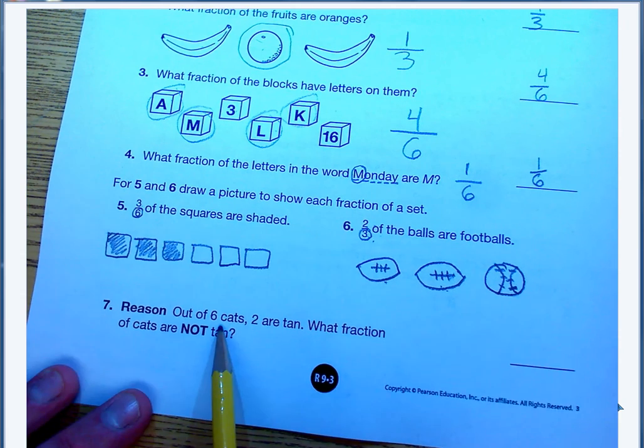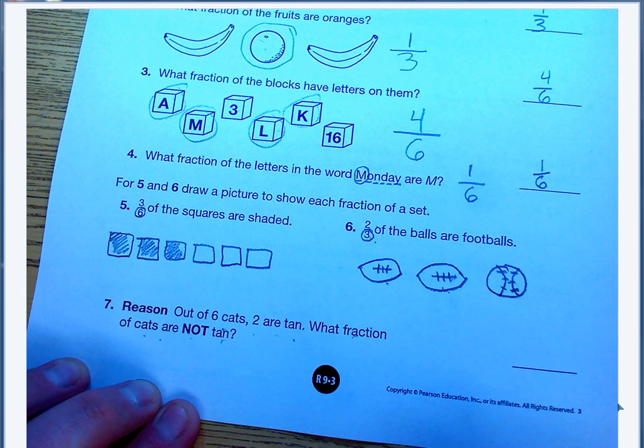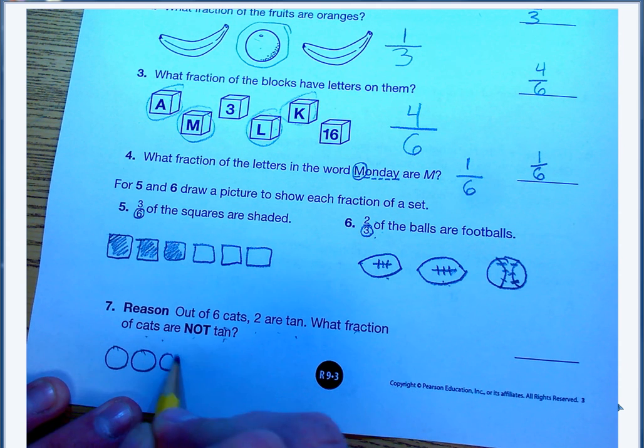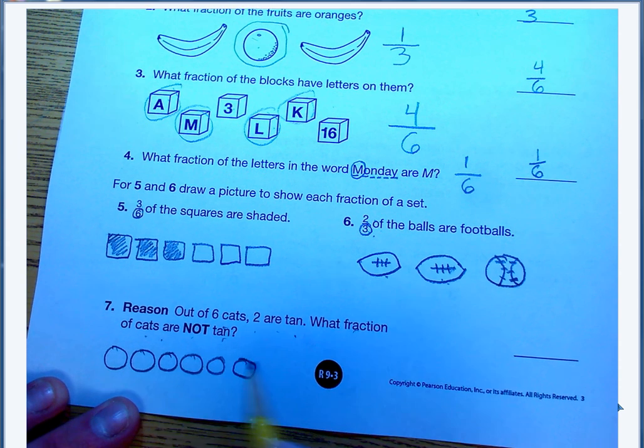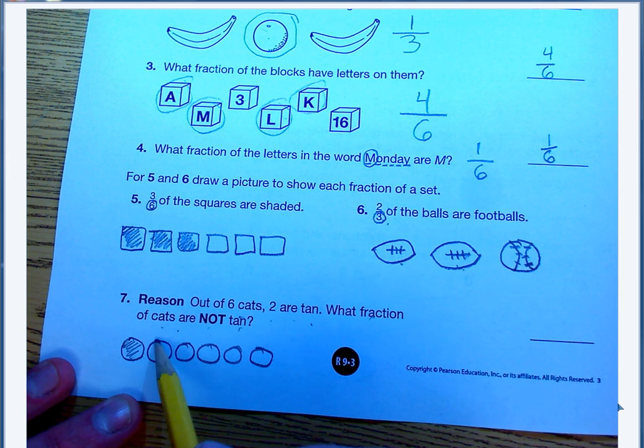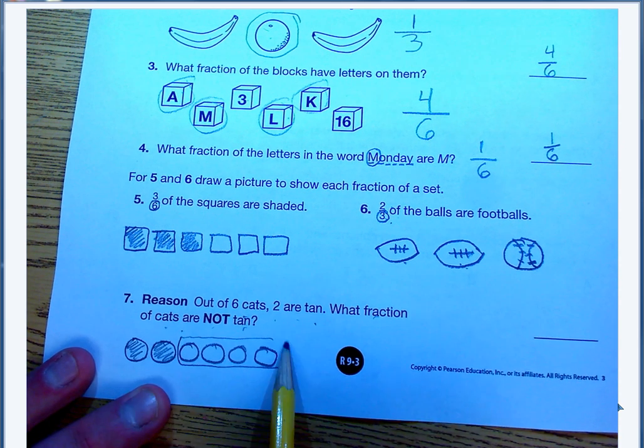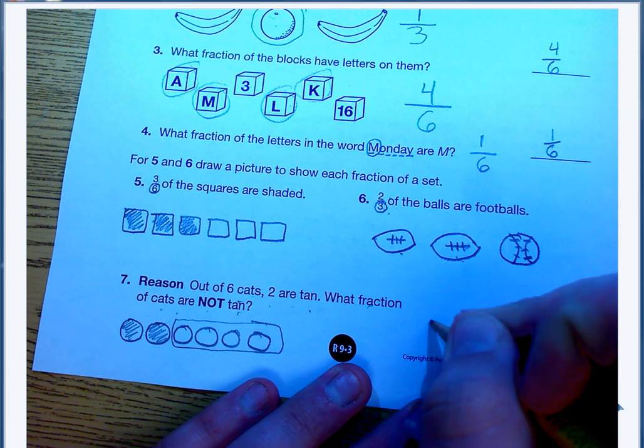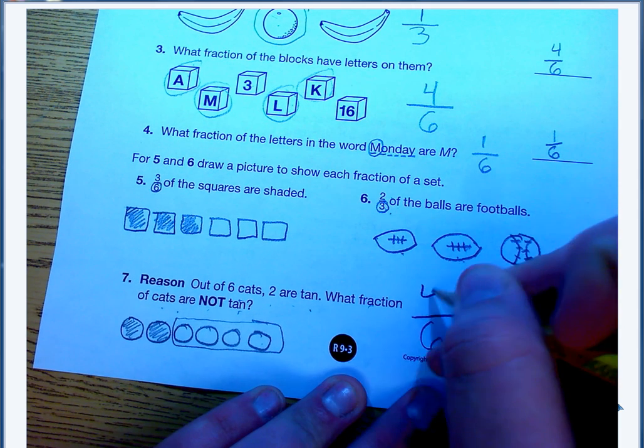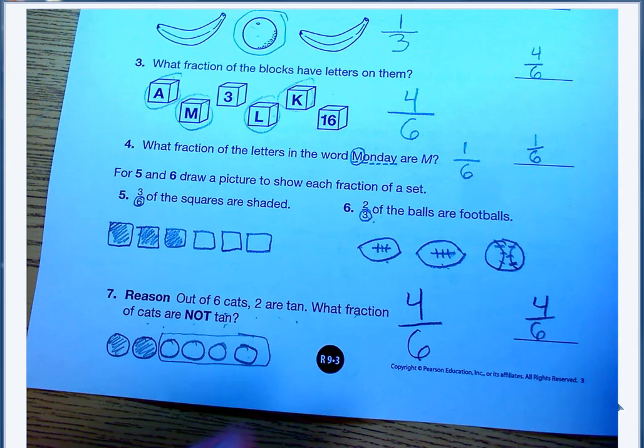Out of 6 cats, 2 are tan. What fraction of cats are not tan? If I have 6 cats, I'm going to draw to visualize that. 1, 2, 3, 4, 5, 6. Out of the 6, 2 are tan. So I'm just going to shade in 2 for tan. What fraction of the cats aren't tan? I need to focus on these 4. I already know I have 6, so that has to be my total number. But how many are left that aren't tan? 1, 2, 3, 4. So 4 out of the 6 are not tan, or the correct way to say it is 4 sixths are not tan.